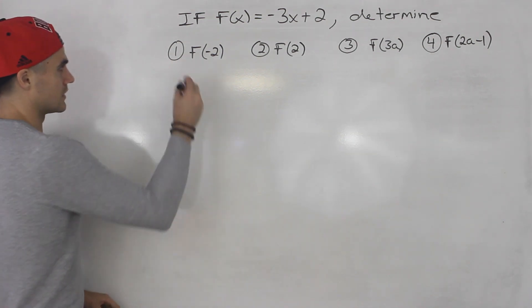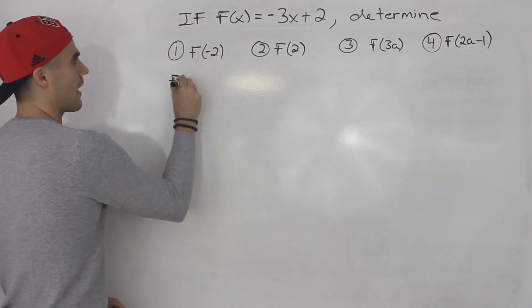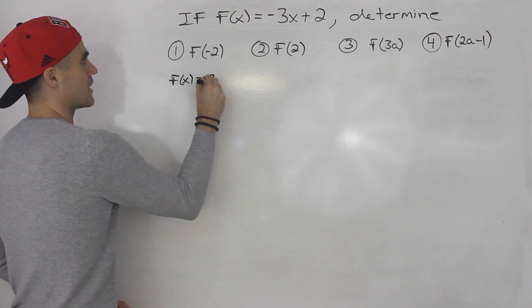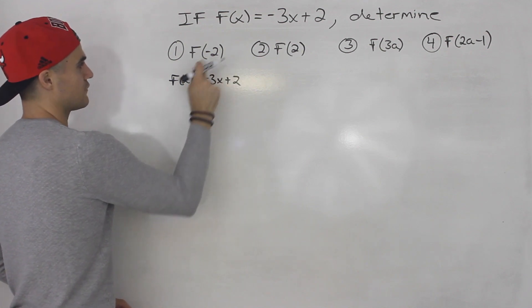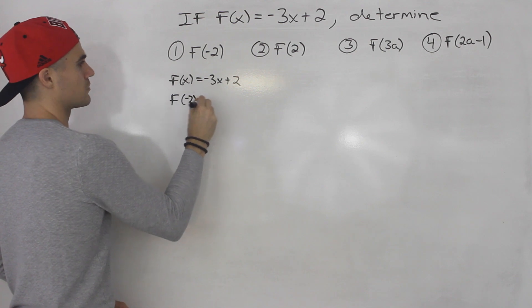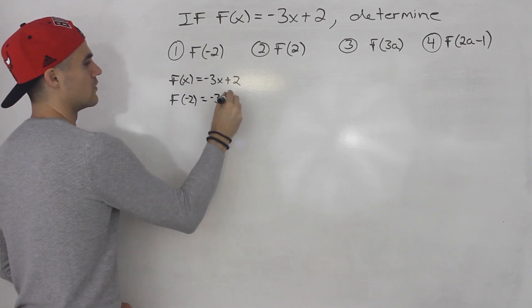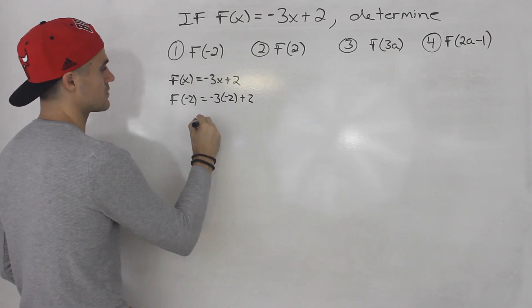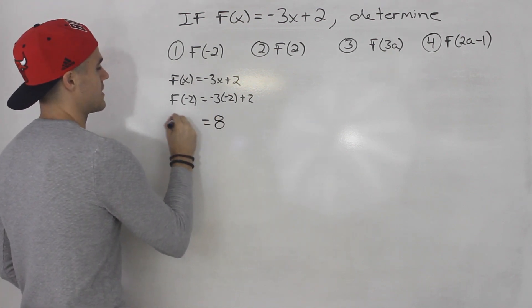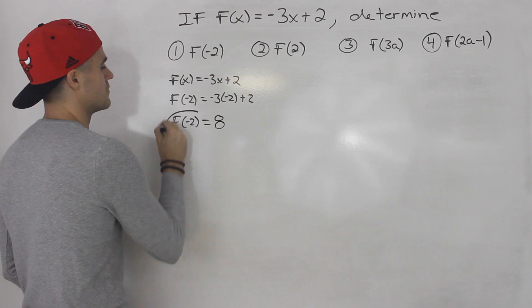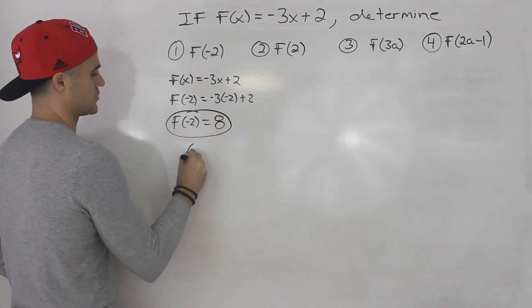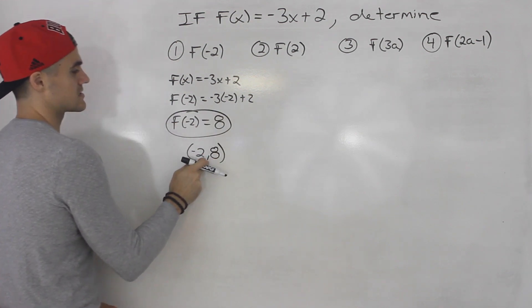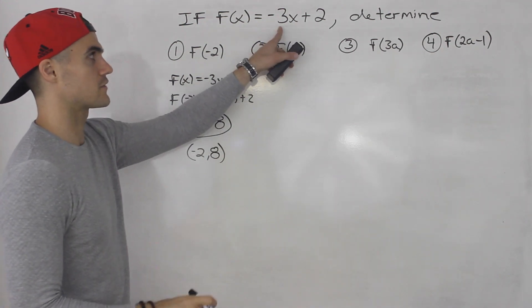Starting here, let's rewrite this. We got f of x equals negative 3x plus 2. f of negative 2, all we're doing is plugging in negative 2 for x. So negative 3 times negative 2 is 6, plus 2 gives us 8. So f of negative 2 is equal to 8, which means negative 2 and 8 is a point on this function.